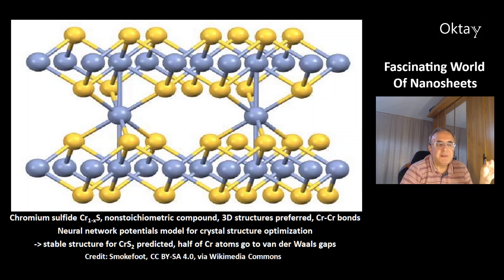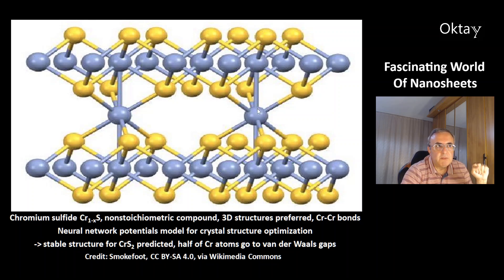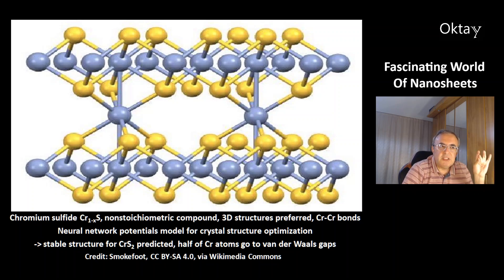This is a picture of chromium sulfide — a non-stoichiometric compound with the formula Cr2S–Cr1-xS. In the picture, chromium is blue and sulfur is yellow. This compound is known to prefer 3D structures over 2D structures, and you can see metal-metal bonds between chromium atoms. A neural network potentials model for crystal structure optimization was applied to this compound, and it predicts a stable structure for CrS2 because half of the chromium atoms go into the van der Waals gaps.